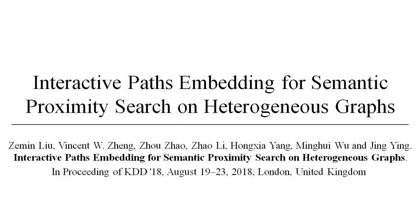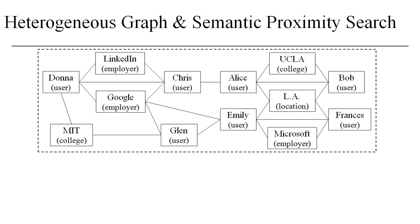Hello, everyone. Welcome to this brief introduction for our KDD 18 paper. Semantic proximity search is an important task on many real-world heterogeneous graphs. It aims to measure the proximity between two nodes on a heterogeneous graph with regard to some given semantic relation.